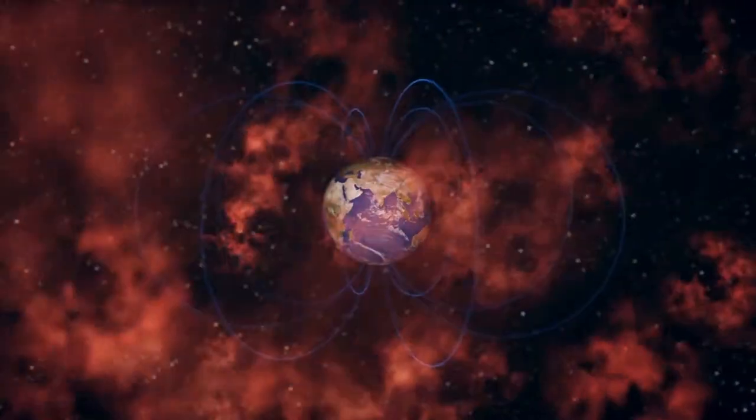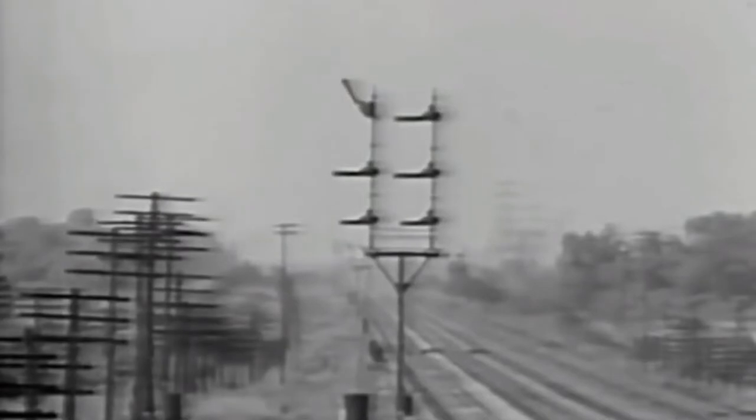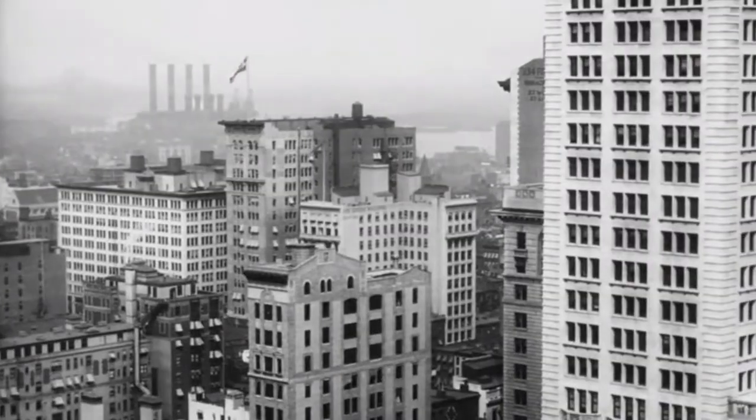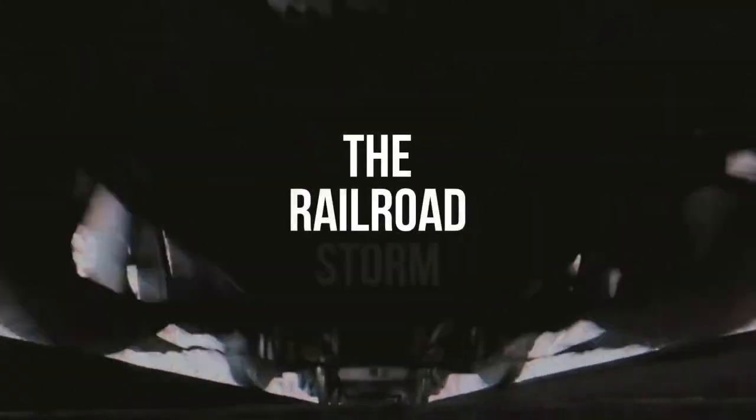A geomagnetic storm disabled half of the New York Central Railroad equipment and left almost the entire east coast of the United States without communication. This event was called the Railroad Storm. Let me remind you that this is just usual solar activity.